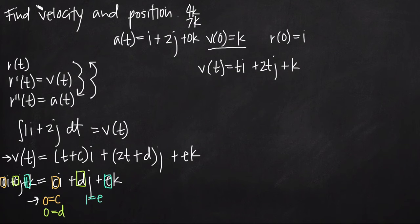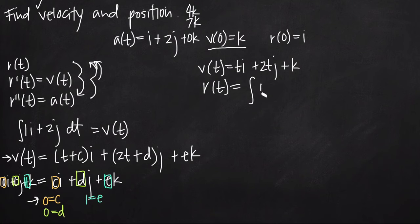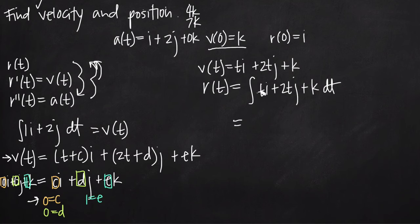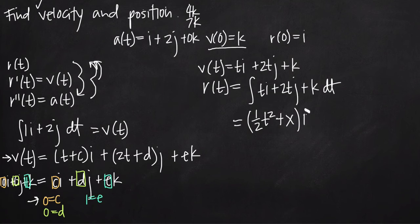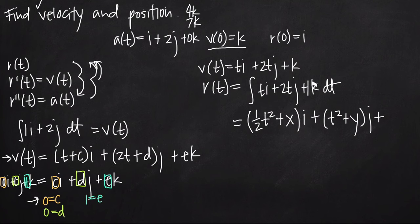Now we need to find the position function. Position is the integral of velocity, so r(t) equals the integral of ti + 2tj + k with respect to t. Taking the integral of each coefficient: the integral of t is (1/2)t², so we get (1/2 t² + x)i. The integral of 2t is t², giving (t² + y)j. And the integral of 1 (for k) is t, giving (t + z)k. So r(t) = (1/2 t² + x)i + (t² + y)j + (t + z)k.